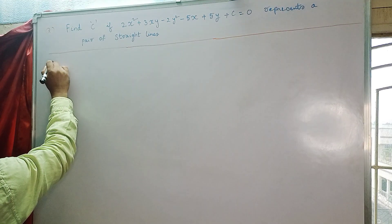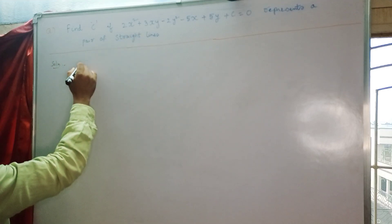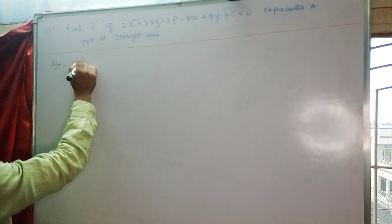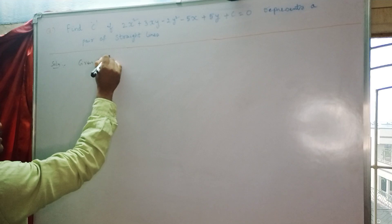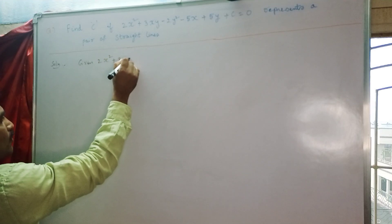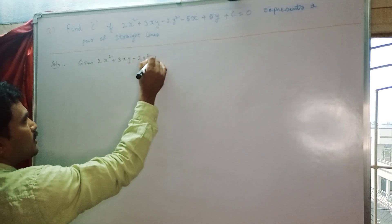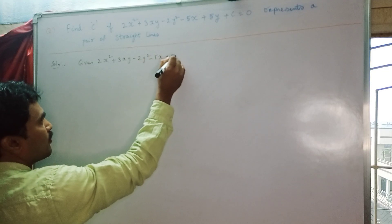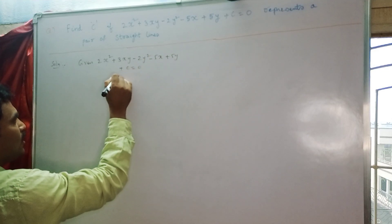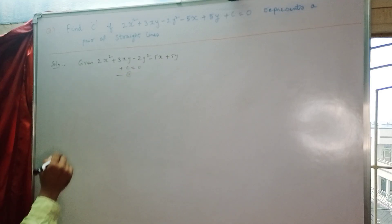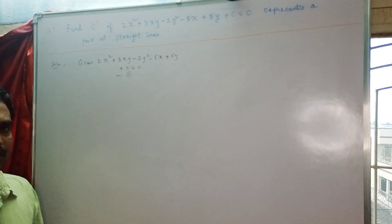Now we will start the solution. The first step is to write the given equation of conic. Given: 2x² + 3xy - 2y² - 5x + 5y + c = 0. We will number this as equation 1. Now we compare equation 1 with the general equation of the conic.